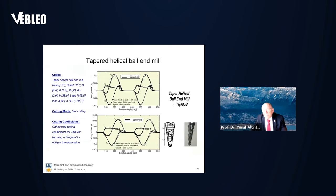For example, this is taper helical ball end mill used in five-axis machining of aircraft engine compressors, impellers. The material is titanium, which is very difficult to cut.